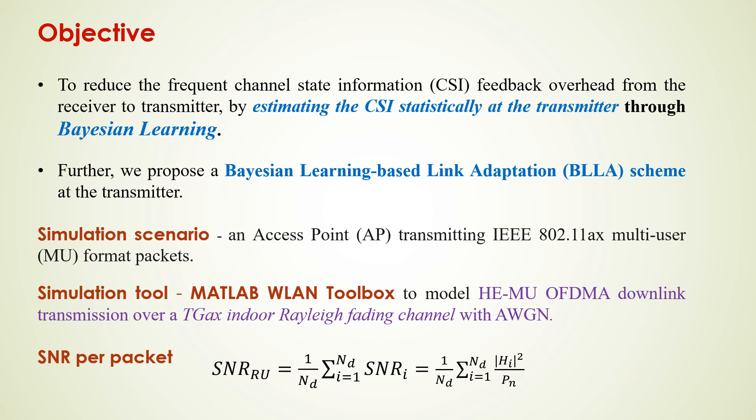Our objective is to reduce the frequent channel state information feedback overhead from the receiver to transmitter by estimating the CSI statistically at the transmitter through Bayesian learning. Further, we propose a Bayesian learning based link adaptation scheme at the transmitter.